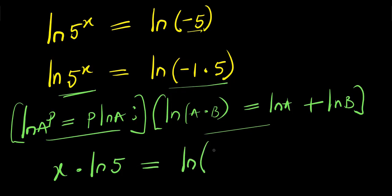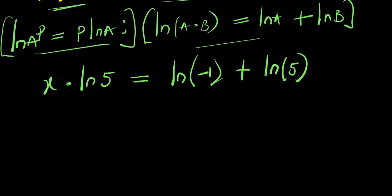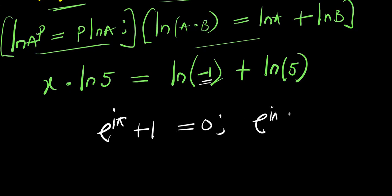This negative 1 is my a, so I have natural log of negative 1, plus natural log of 5. Now, instead of writing negative 1 here, I can consider this identity: if you have e power i times pi plus 1, this equals 0, meaning e power i times pi equals negative 1.